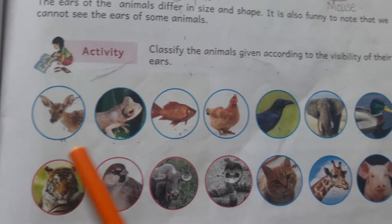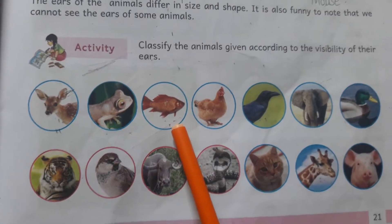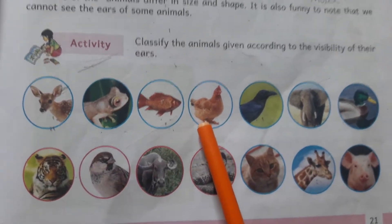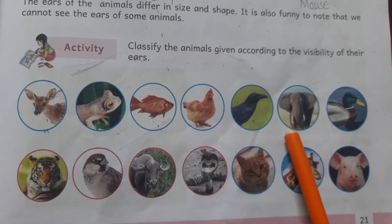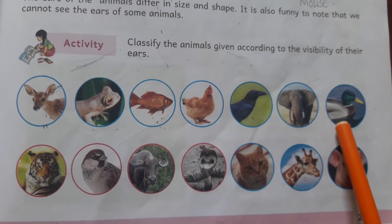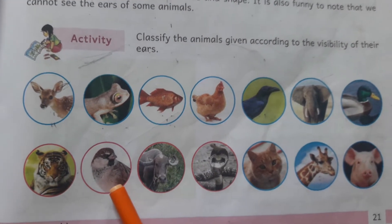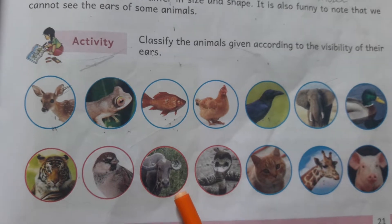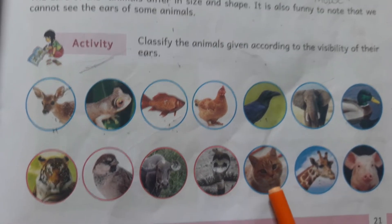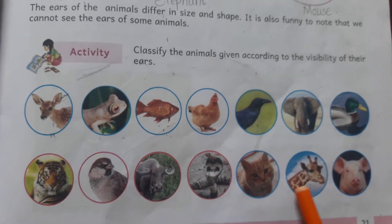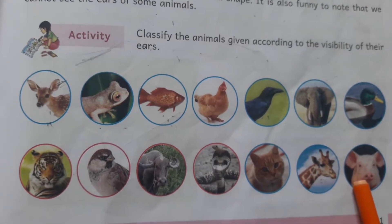The animals given are: deer, frog, fish, hen, crow, elephant, duck, tiger, sparrow, buffalo, snake, cat, giraffe, and pig.